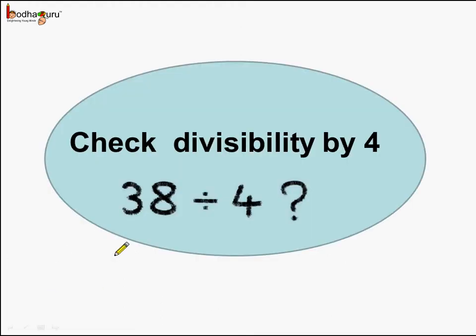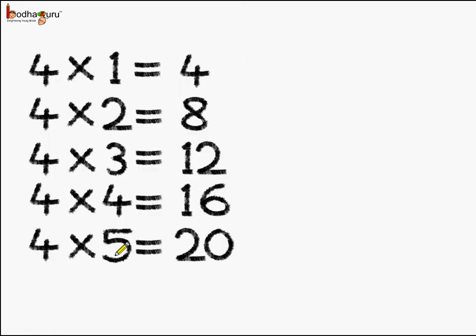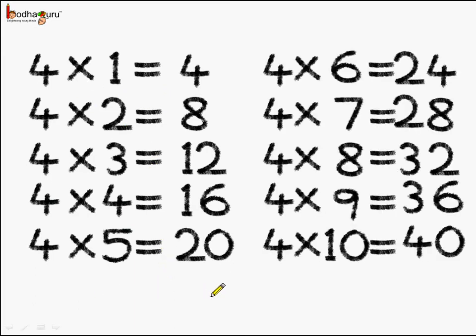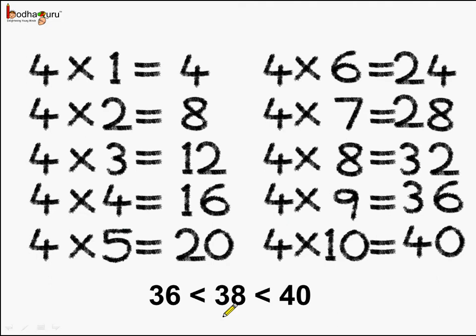Now let us check the divisibility of the number 38 by 4. If we see the table of 4, then 38 is greater than 36 but less than 40. This means 38 is not exactly divisible by 4.